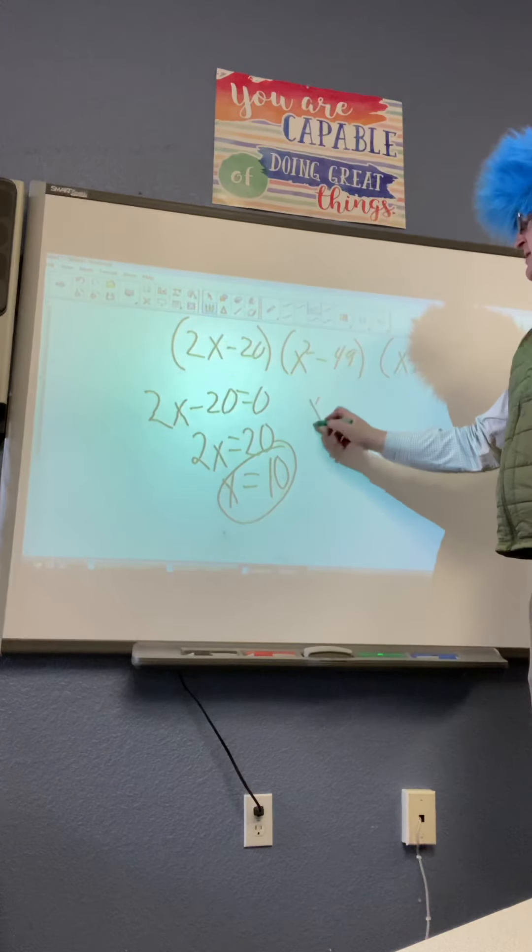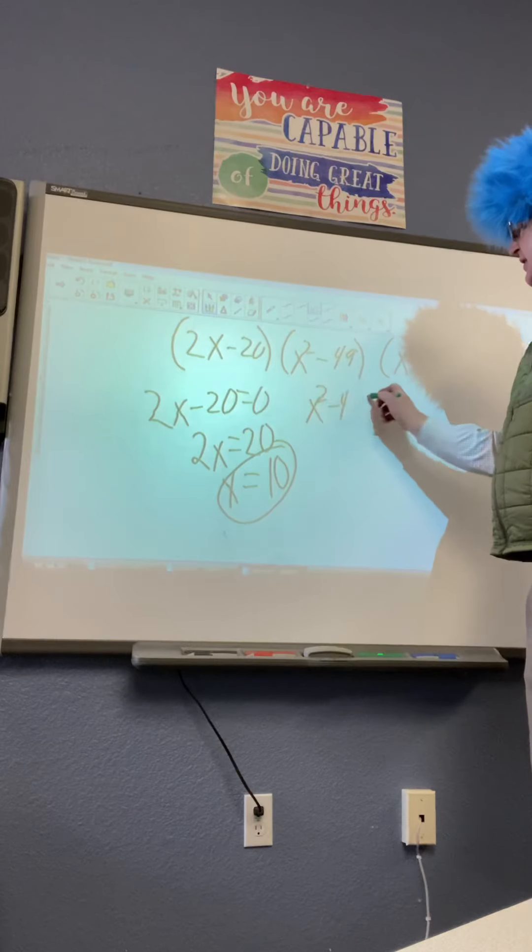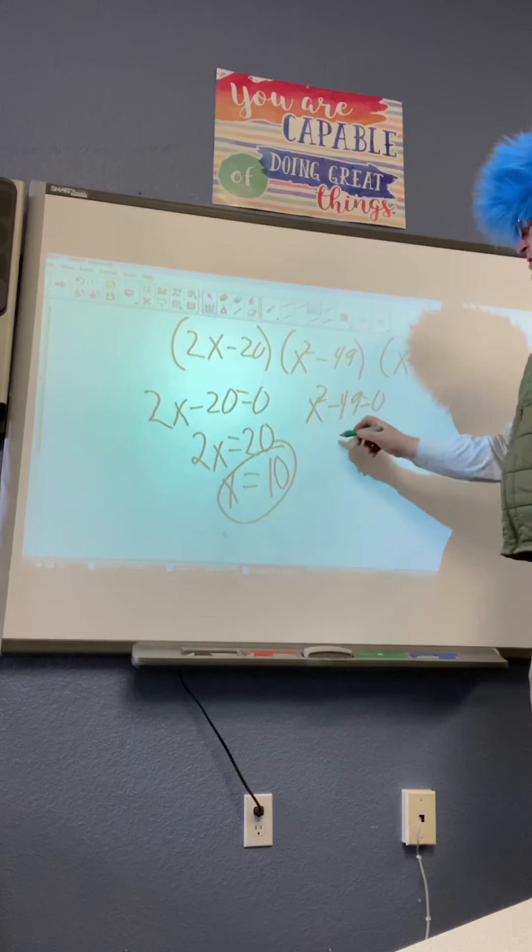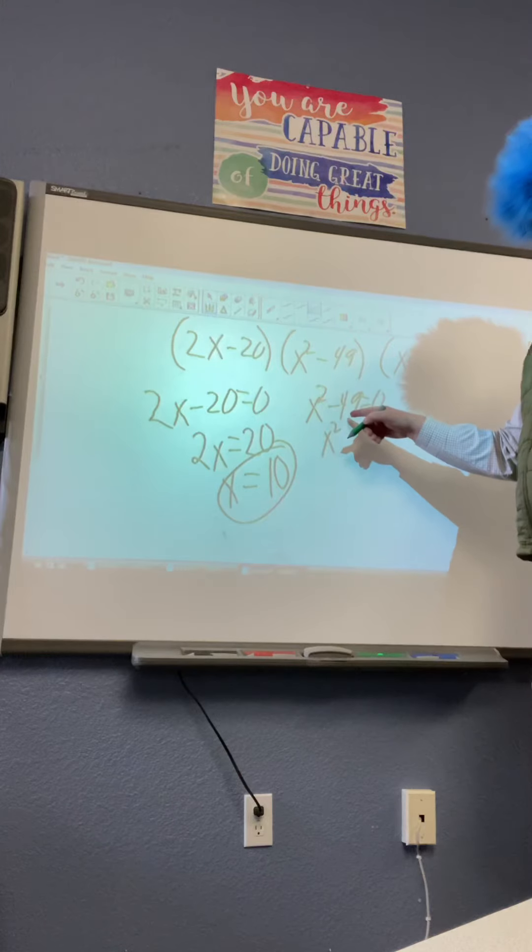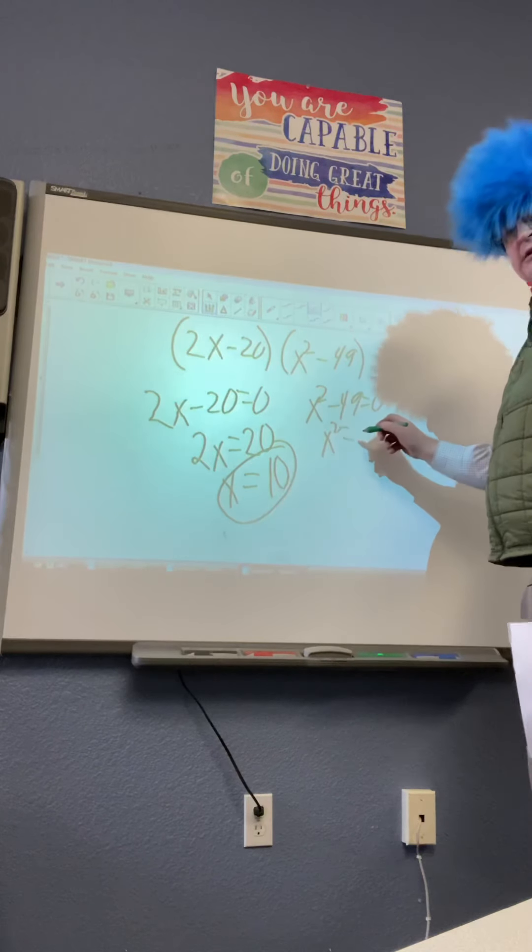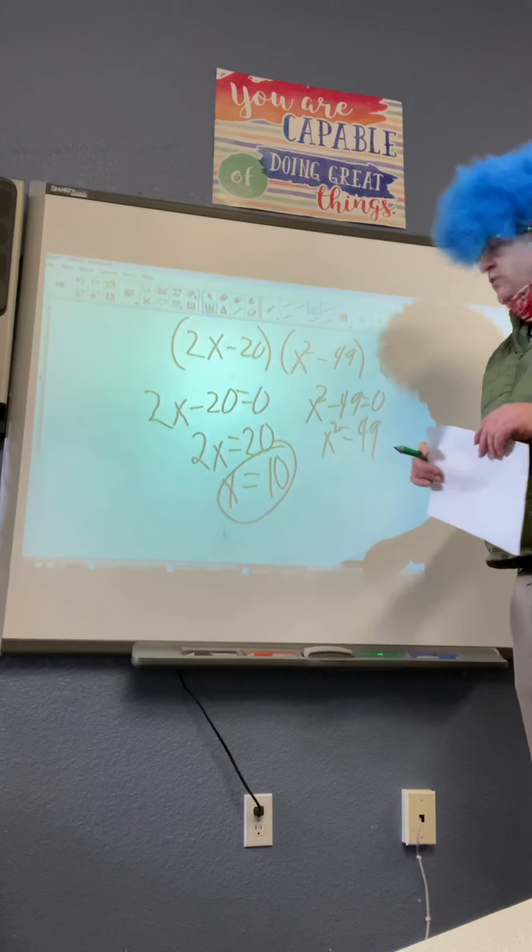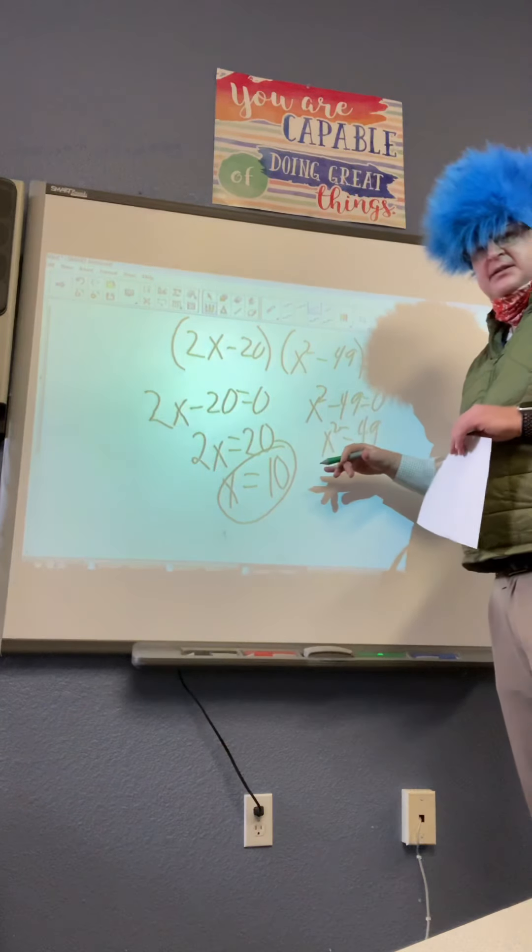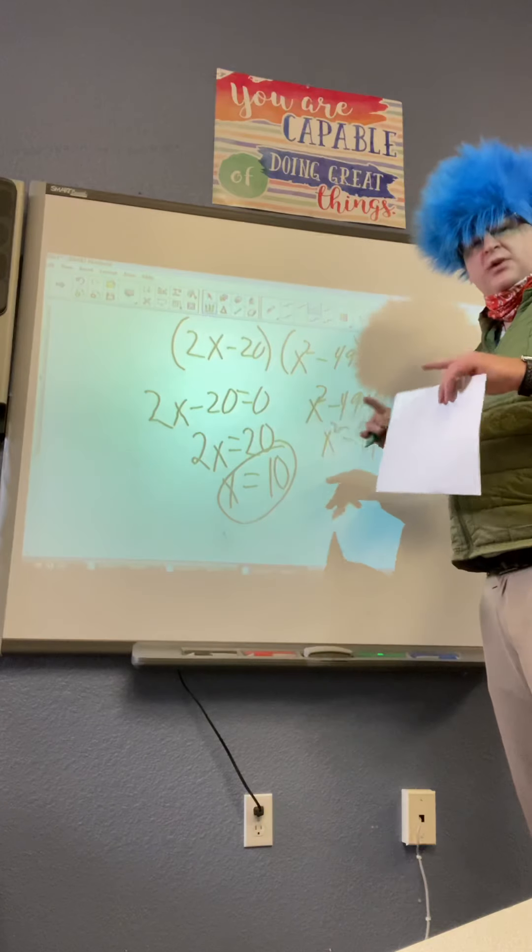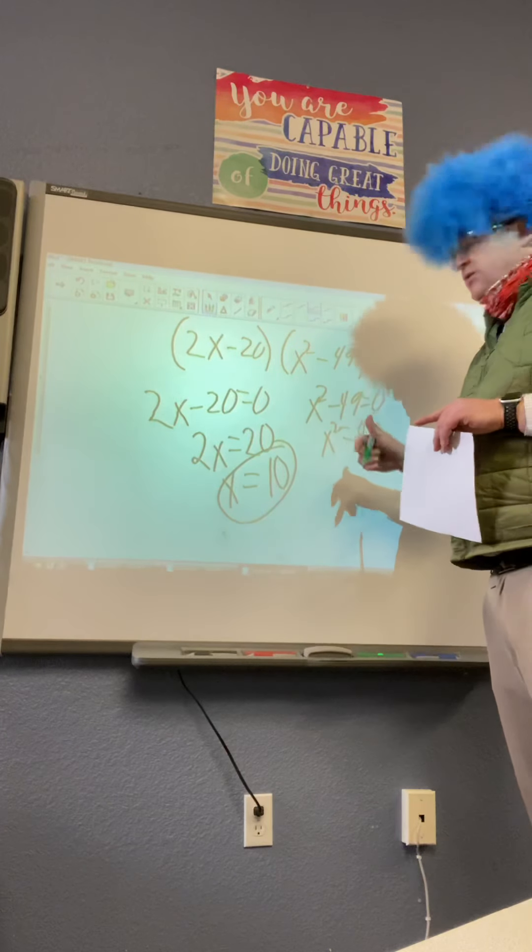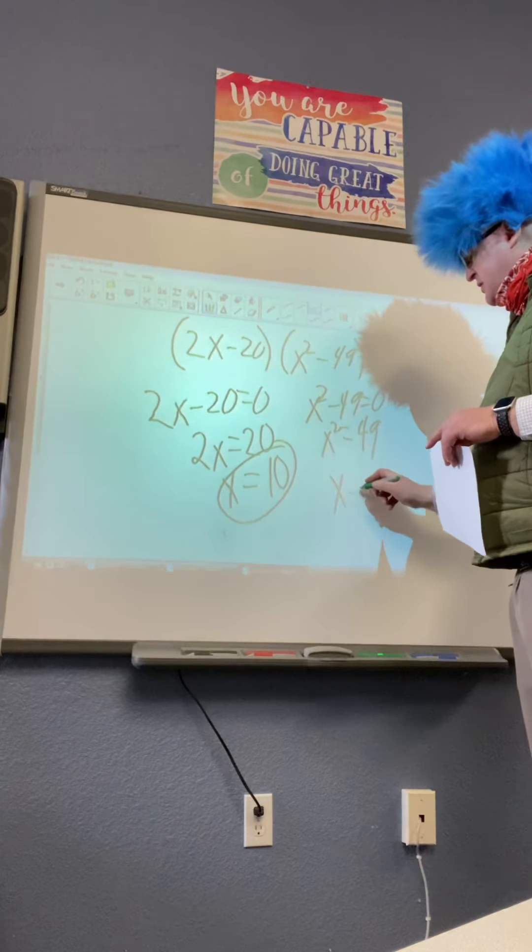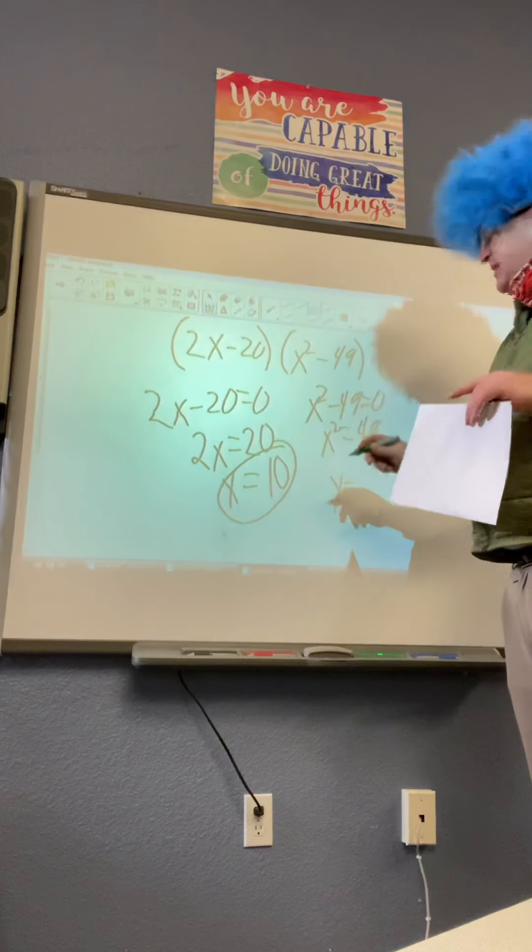All right, we have x squared minus 49 equals 0. So x squared. We have to add 49 to both sides. We want just x. This is squared. The opposite of squaring something is square root. So 7 times 7 is 49.